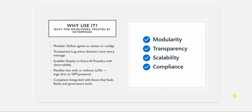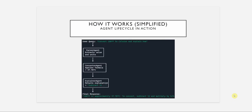Here is a simplified workflow showing how the system works. A user gives a query: 'Convert 100 degrees Fahrenheit to Celsius and explain how it is done.' We have three different agents handling this, and at the end we get the final output.